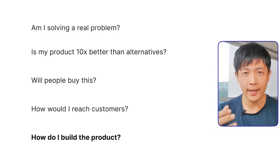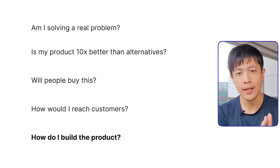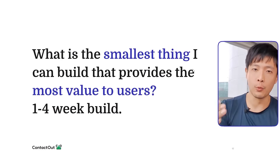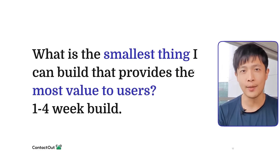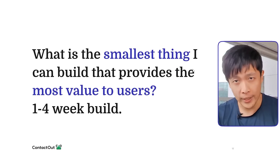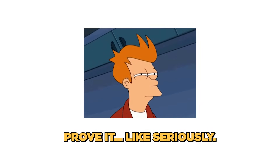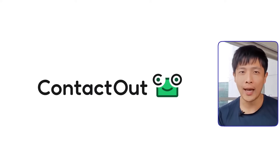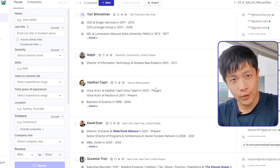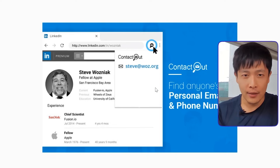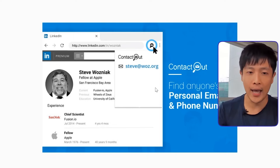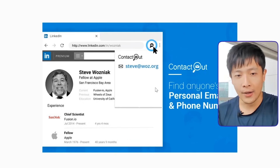There's actually building the product, which typically takes the most amount of time — which is why we want to validate that there is demand first. For our first product, we want to ask: what is the smallest thing I can build that provides the most value to users, and ideally is buildable within one to four weeks? If it takes longer than four weeks, we want to break it down into smaller chunks or be very sure we've proven demand enough to warrant the extra time investment. With ContactOut, the first version was simply a pop-up on top of LinkedIn that gave you an email address. In hindsight, we should have bought competitor email data and aggregated it to resell to customers, which was something we could have done in two to four weeks.